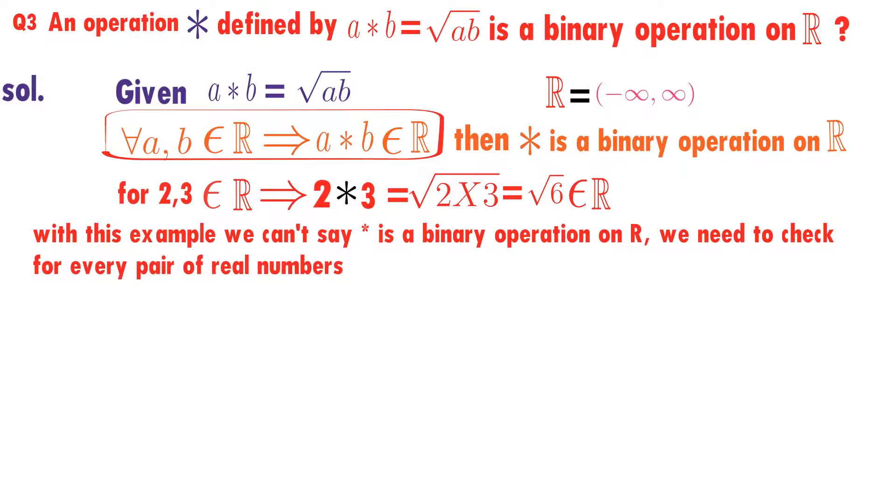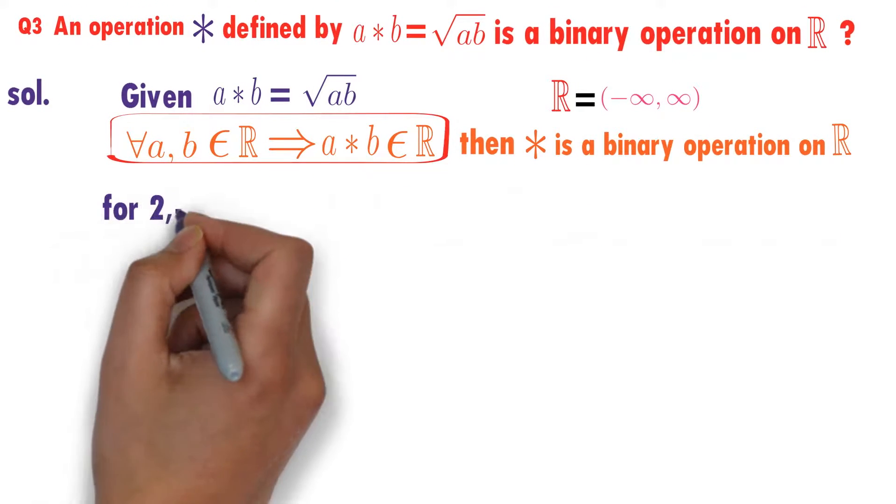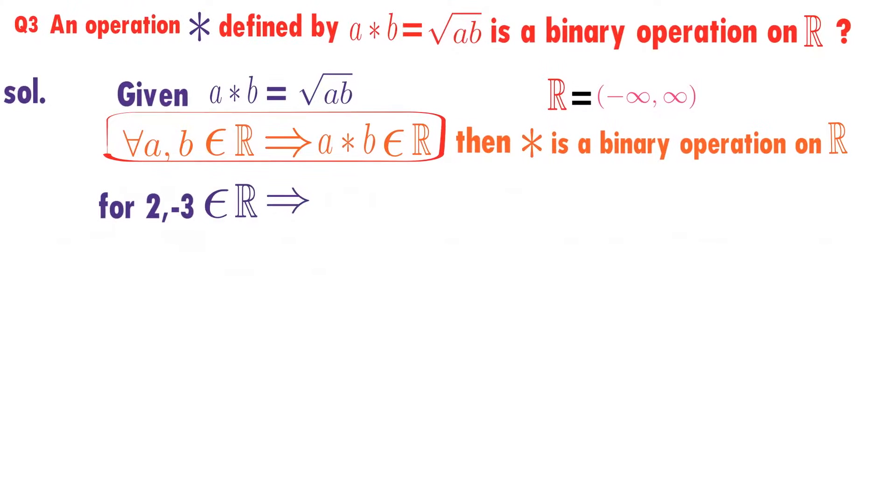If you can find one example which is not satisfying the given condition, then we can say that star is not a binary operation on R. I will take two real numbers 2, minus 3. Now I will calculate 2 star minus 3.